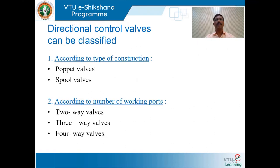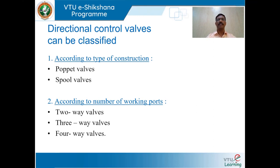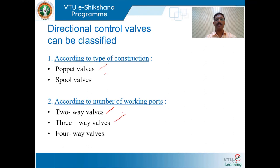We shall move on to the classification of directional control valves. DCVs are classified according to the type of construction — poppet valves and spool valves. They are also classified according to number of working ports: 2-way valves, 3-way valves, and 4-way valves.